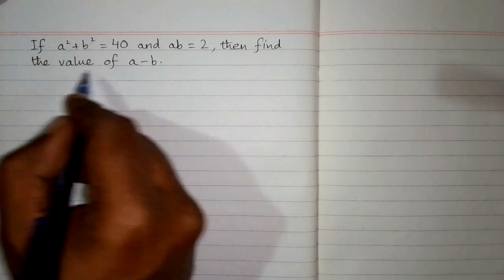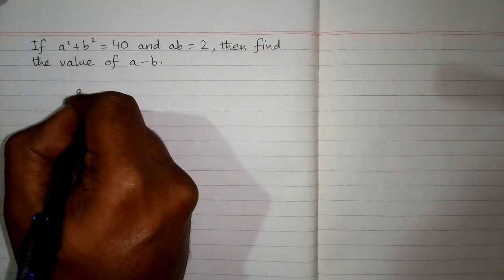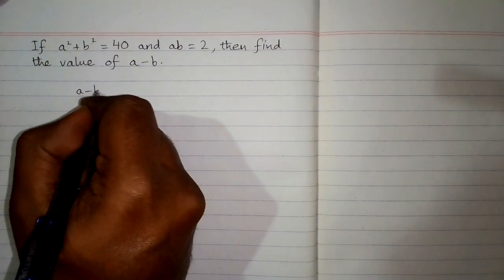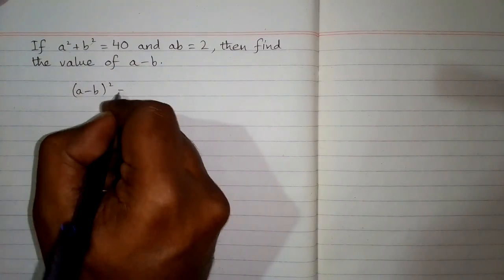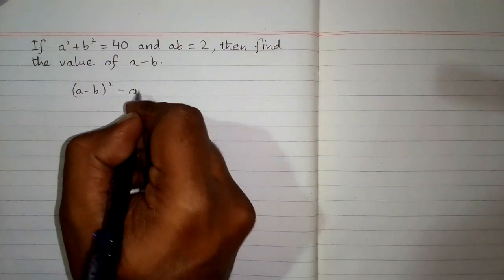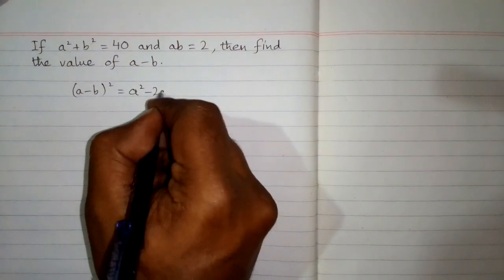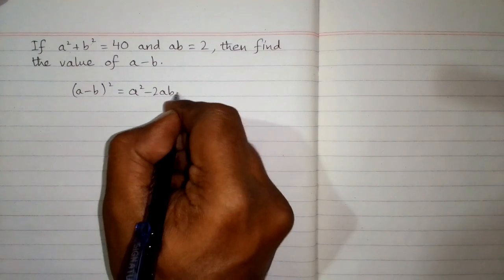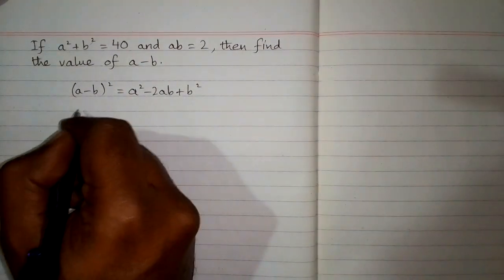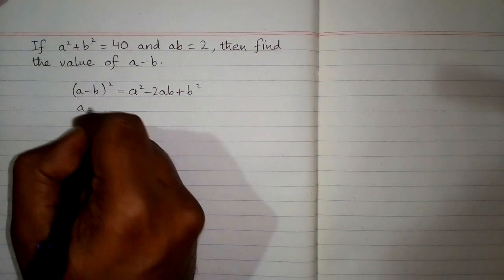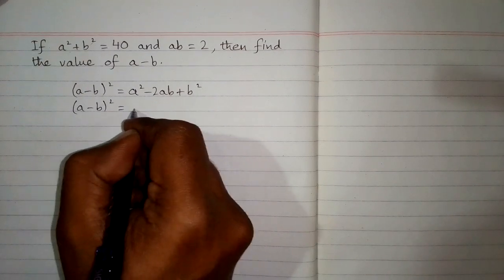In order to solve this problem, we will use the algebraic identity: a minus b whole square is equal to a squared minus 2ab plus b squared. This can be rewritten as a minus b whole square is equal to a squared plus b squared minus 2ab.